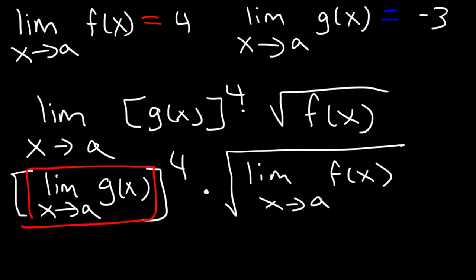So, this portion is equal to negative 3. So, we have negative 3 raised to the 4th power, times the square root of 4. Negative 3 to the 4th power is 81, the square root of 4 is 2, so this is equal to 162.